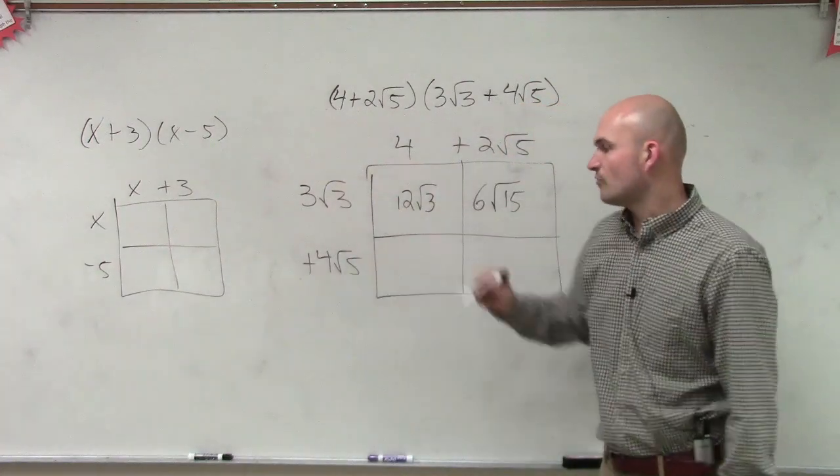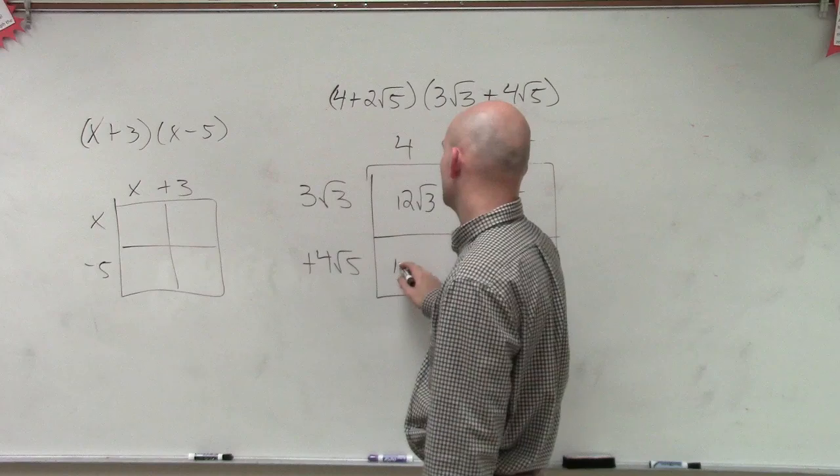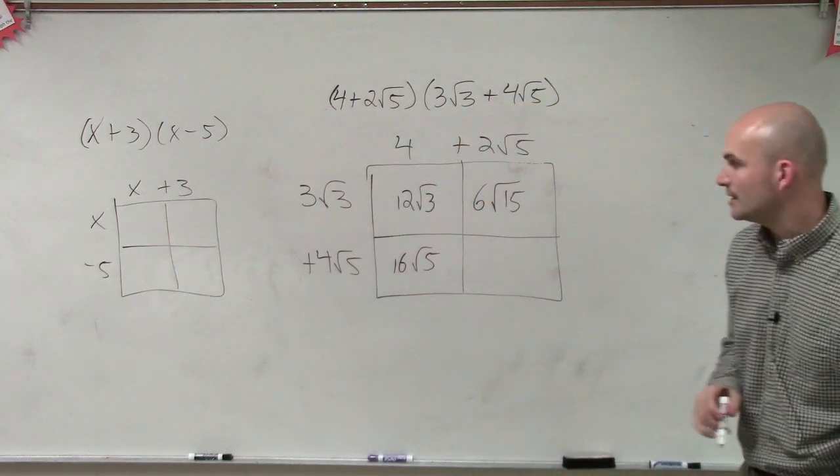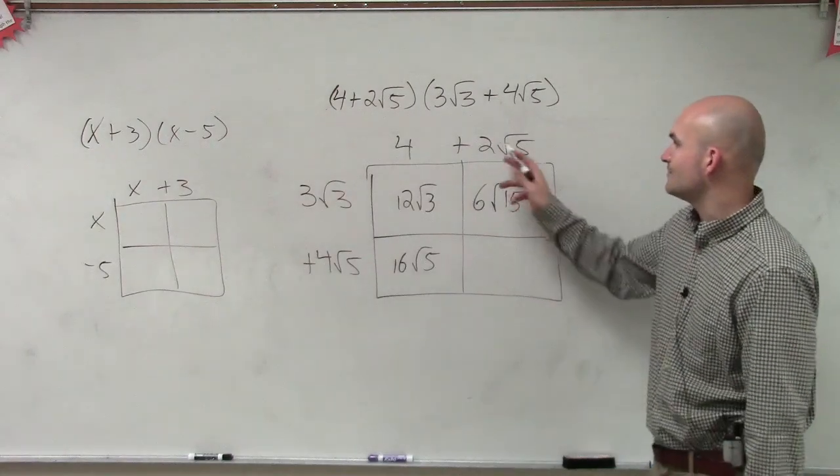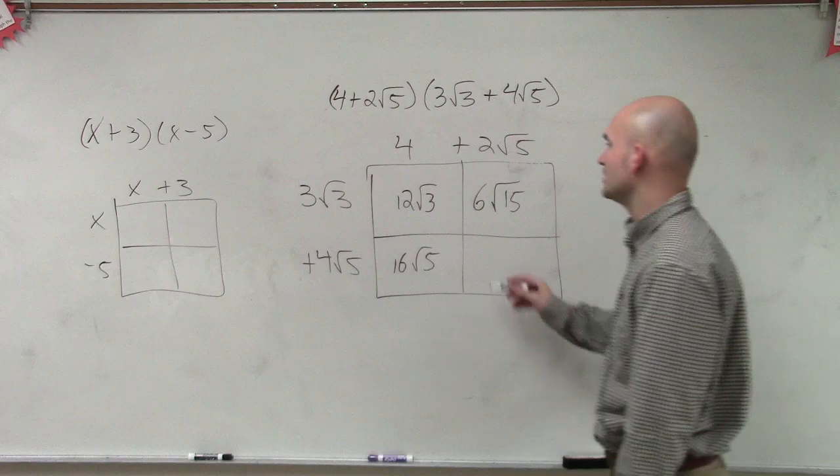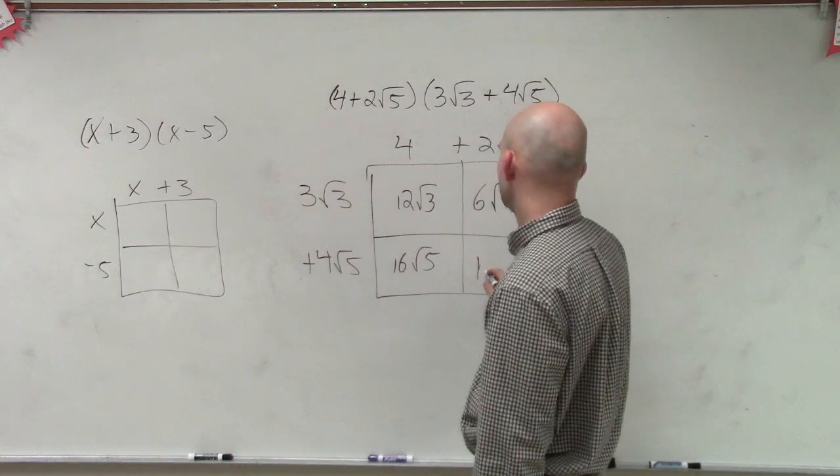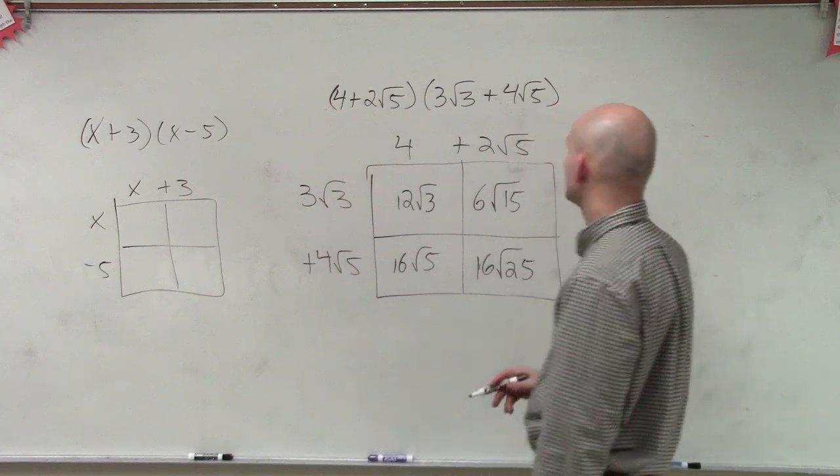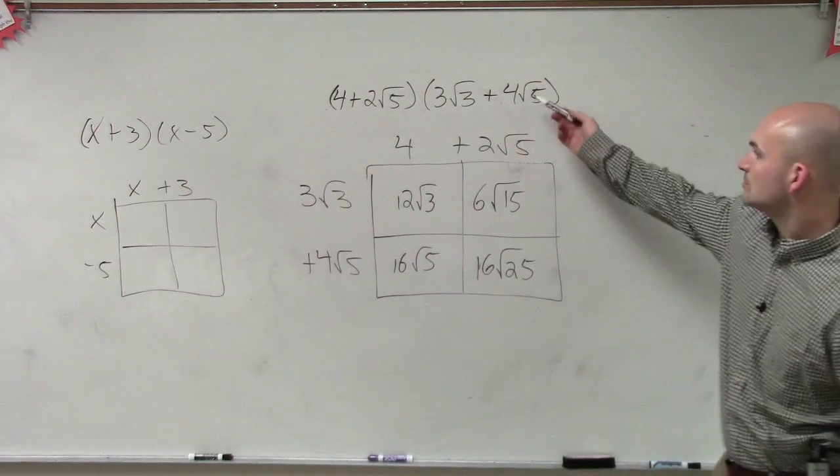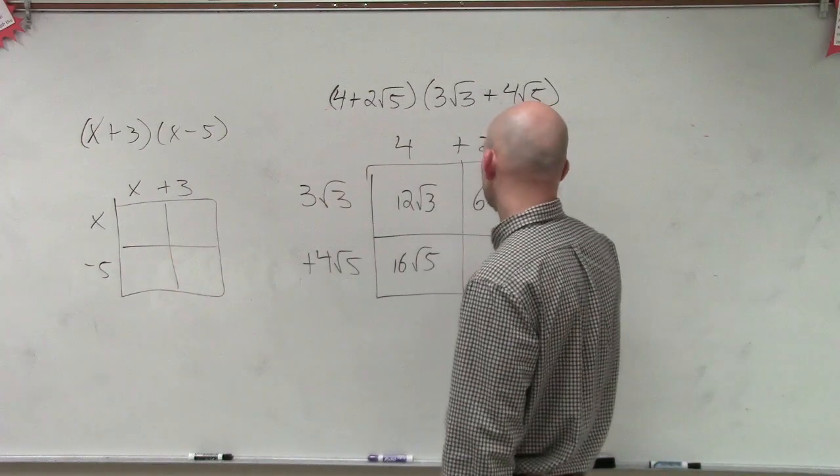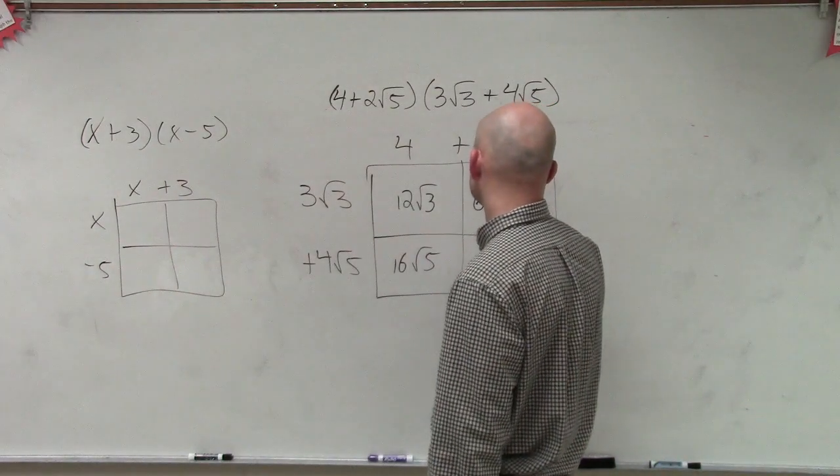Then I do 4 times 4√5, which will be 16√5. And then I have 2√5 times 4√5, which is going to be 8√25.